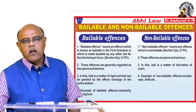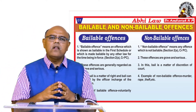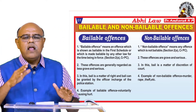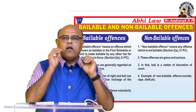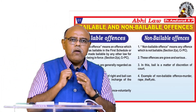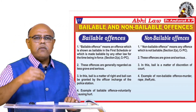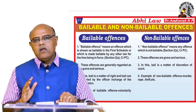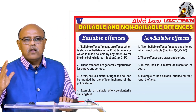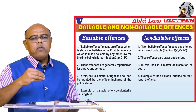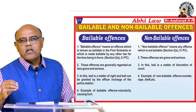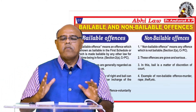How has the legislature categorized offenses as bailable or non-bailable? Those offenses which are generally regarded as less grave and serious are bailable offenses, but those which are grave and serious are non-bailable offenses. In a bailable offense, bail is a matter of right and can be granted by the officer in charge of the police station. In a non-bailable offense, bail is not a matter of right — it is the discretionary power of the court. Examples: voluntarily causing hurt is a bailable offense; murder, rape, and theft are non-bailable offenses.